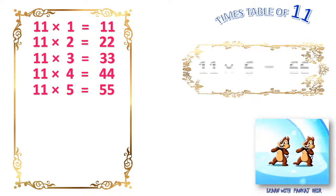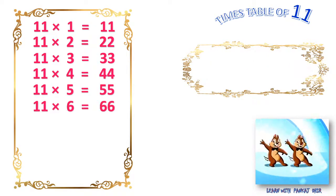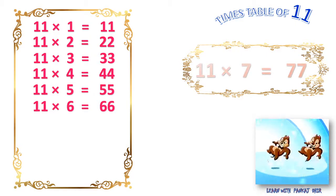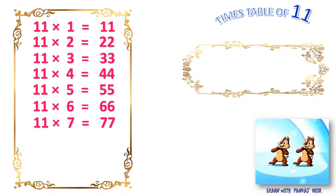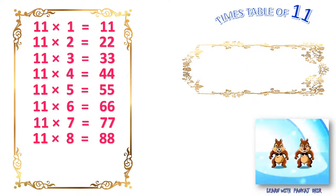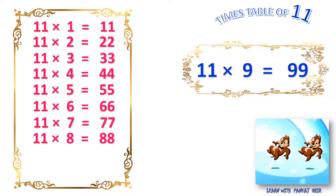11 sixes are 66. 11 sevens are 77. 11 eights are 88. 11 nines are 99. 11 tens are 110.